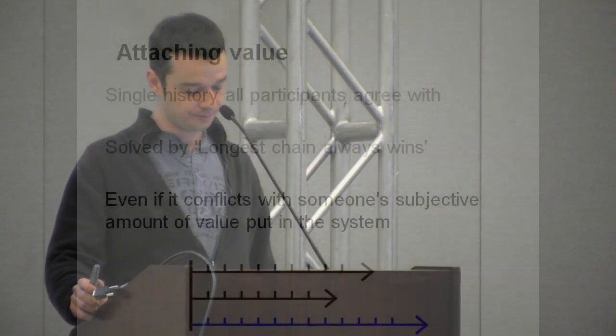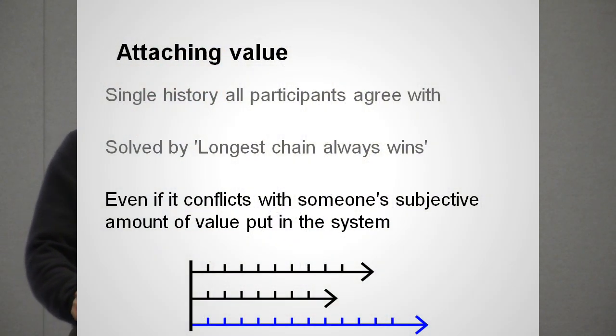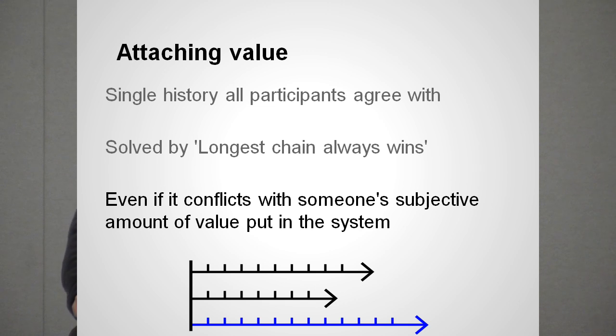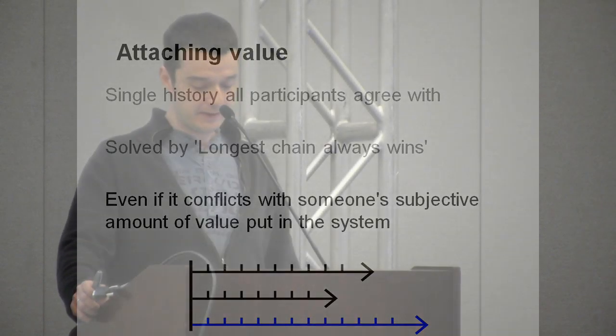By definition, there could be only one longest chain. But I think there is a problem, because now every participant will always accept the longest chain, even if it erases some or all of his value. And this seems to be an operational decision.